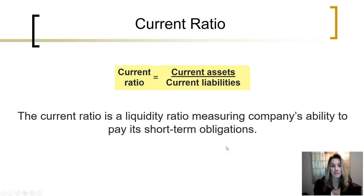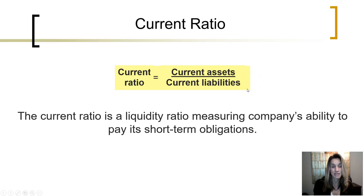This current ratio is a liquidity ratio that measures the company's ability to pay its short-term obligations. The more current assets that a company has, as compared to its current liabilities, or the higher the current ratio, is an indicator that the company has sufficient current assets to pay its current liabilities.